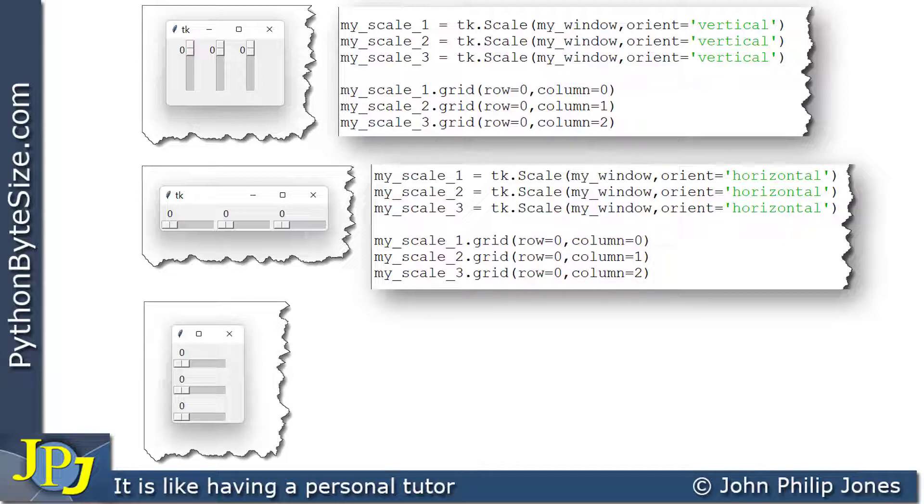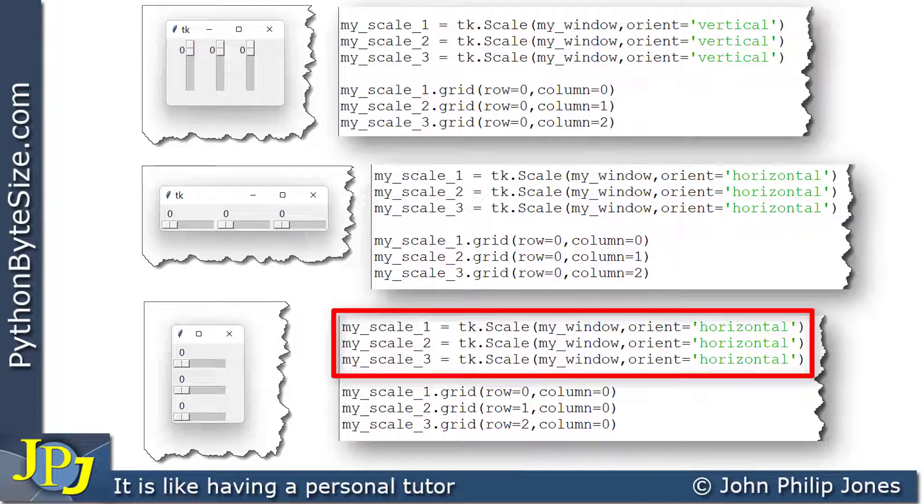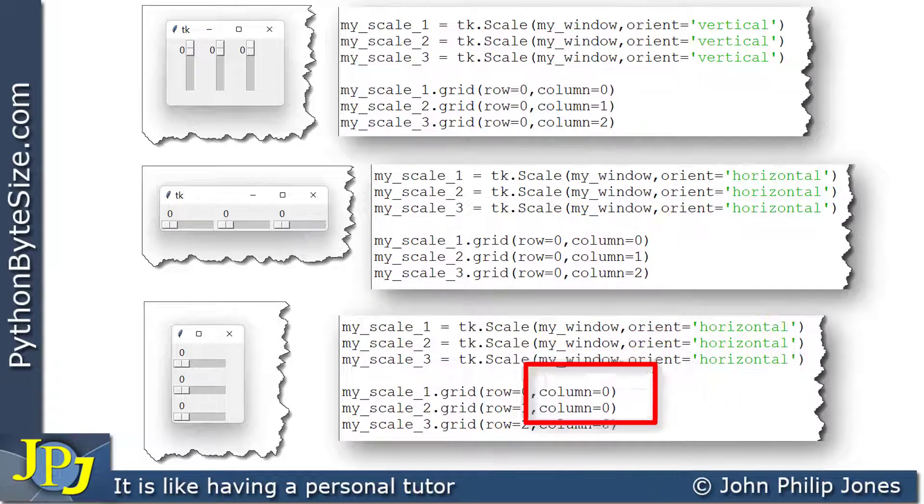And finally, this one here, which is the one we've covered in this video, this is the snippet of code. And you can see when we created the widgets, they were all horizontal. And these are the values we set to the row and column for each of them to give the layout as it appears on the graphical user interface.